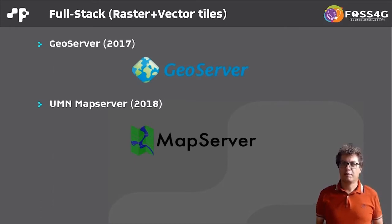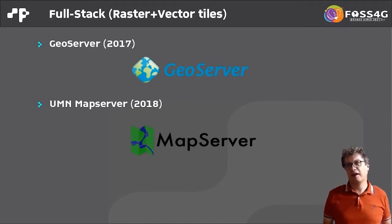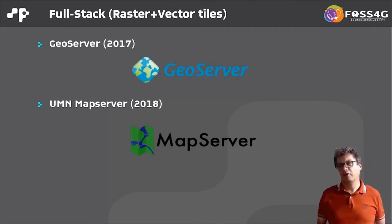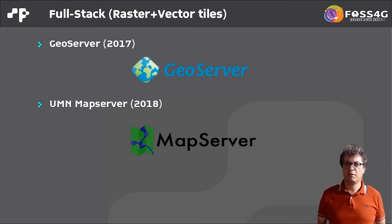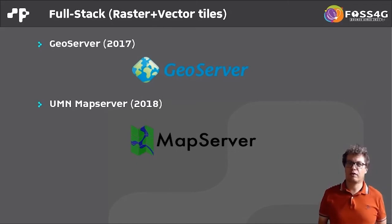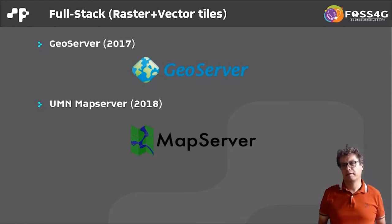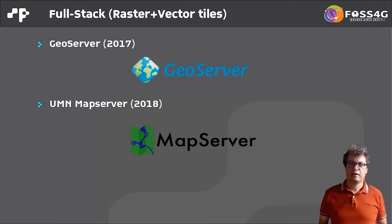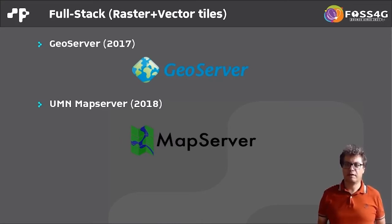The next group I call full-stack vector tile servers — full-stack in the sense that they also include WMS, WFS servers, and so on. The well-known GeoServer and UMN MapServer both have vector tile support: GeoServer since 2017, and MapServer since 2018. If you are already a user of one of these map servers, you can use the built-in capability for producing vector tiles.